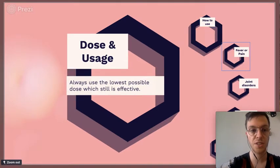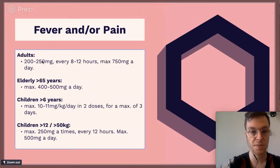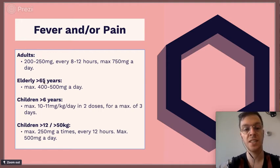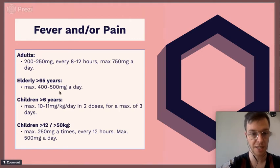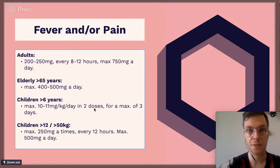For fever and/or pain, adults can use 200 to 250 milligrams every 8 to 12 hours, up to a maximum of 750 milligrams per day. For elderly, the maximum is 400 to 500 milligrams per day. For children older than 6 years, 10 to 11 milligrams per kilogram per day divided over two doses is allowed, for a maximum of 3 days.